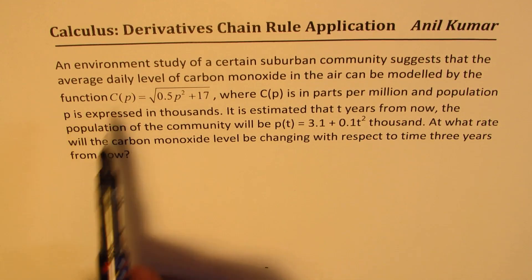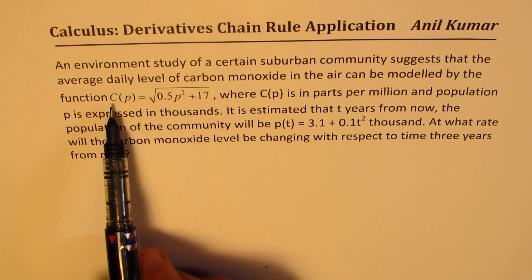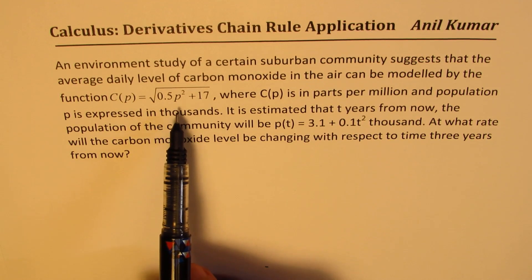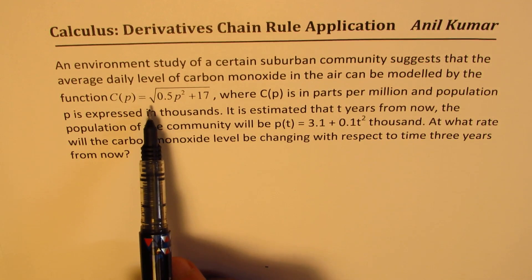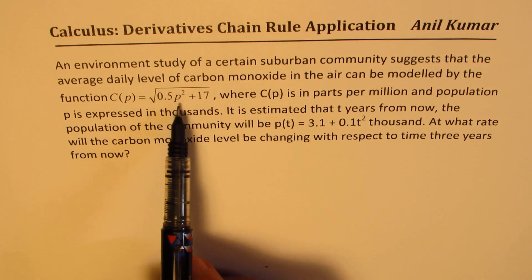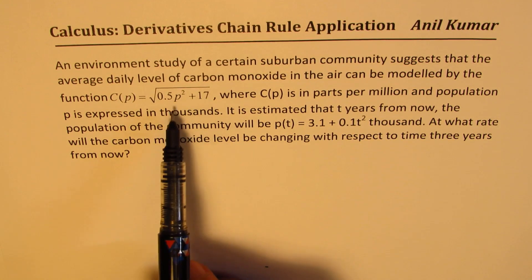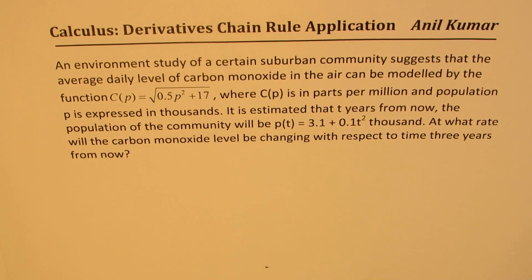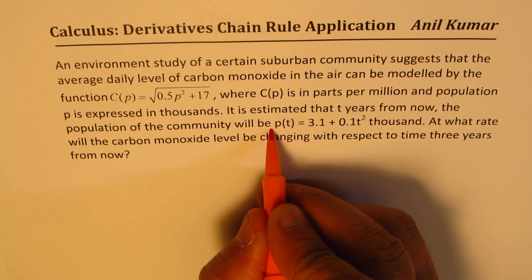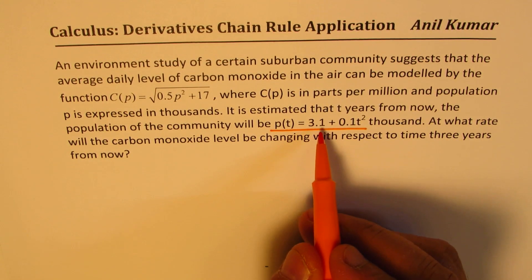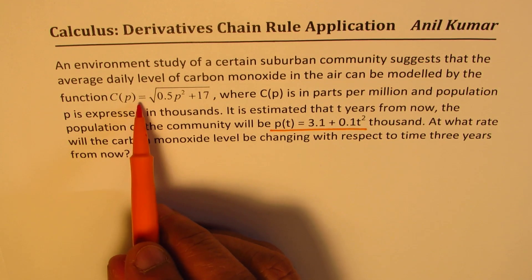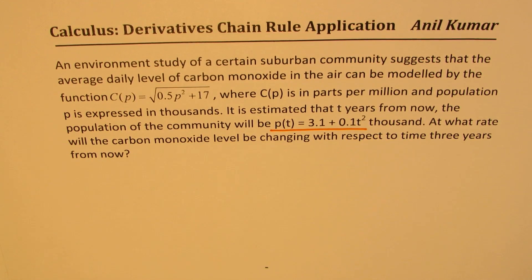So what we are given here is carbon monoxide level in parts per million is dependent on the population with this formula, square root of 0.5p² + 17. On the other hand, population is dependent on time. So with time, population is increasing. With the increase in population, carbon monoxide level is also increasing. So that's the real life situation.